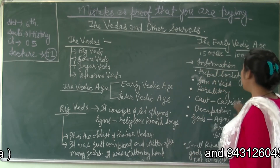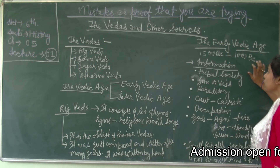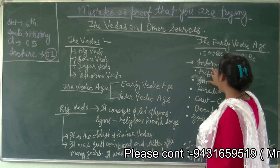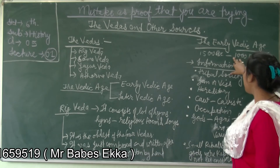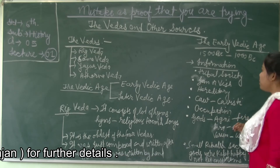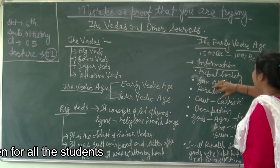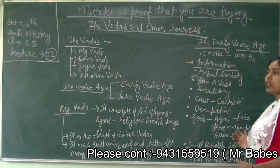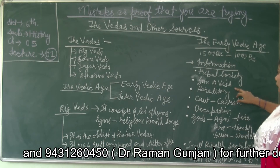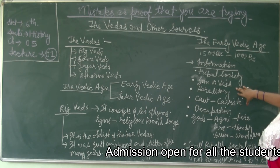The Early Vedic Age spans from 1500 BC to 1000 BC, during which the Rig Veda was written. This period is also called the Early Rig Vedic Age. According to the information from the Rig Veda, people in this period lived in a tribal society with small villages. The group of these tribal societies was called the 'Jana,' and the head of the Jana was called the Raja.